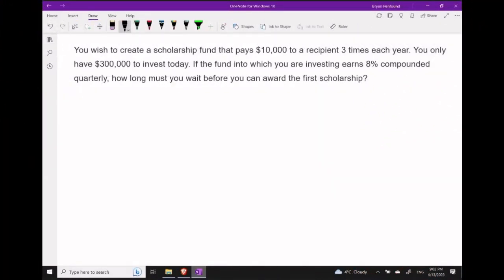You wish to create a scholarship fund that pays $10,000 to a recipient three times every year. However, you only have $300,000 to invest today. If the fund into which you are investing earns 8% compounded quarterly, how long must you wait before you can award the first scholarship?